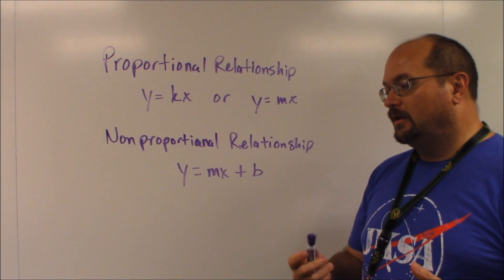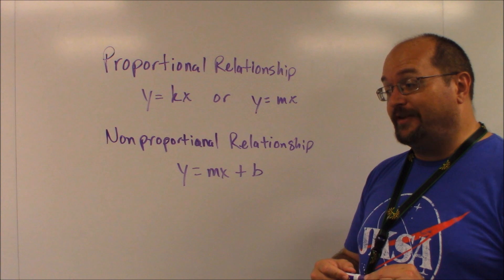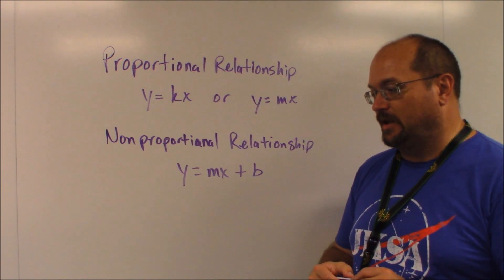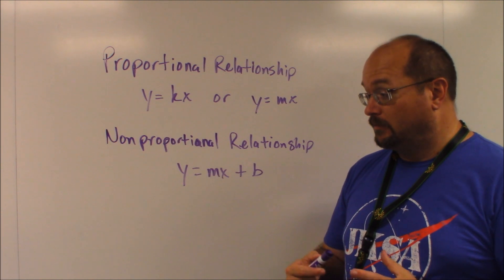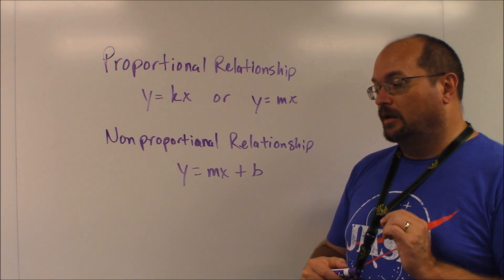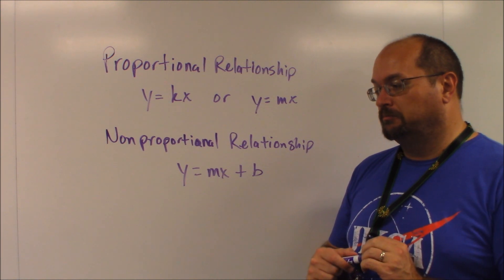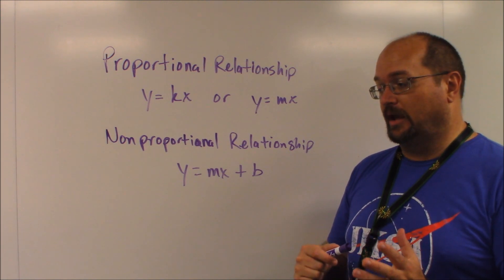Answer choice B, paid a $1 flat fee plus, okay, non-proportional relationship once again. Answer choice C, concert tickets are $60 each. That's it, okay.